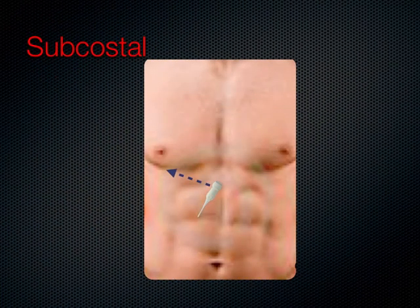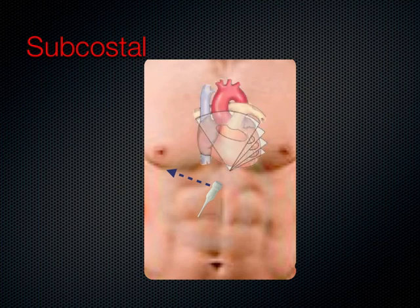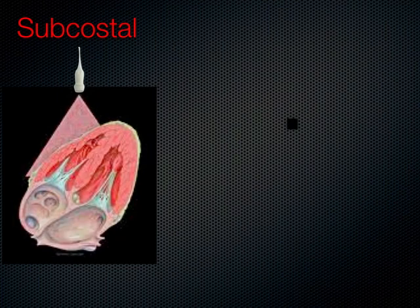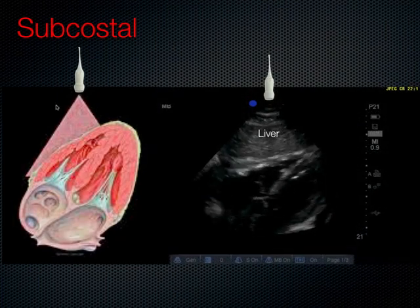Focusing on the subcostal view: this is one of the most useful views, one of the easiest to train, and the one where we can evaluate IVC for volume status. There is an indicator on each probe that helps with orientation. In this view, the indicator is towards the patient's right. From underneath the diaphragm, we look through the diaphragm up into the thorax and view the heart in several different cuts. This is an overhand grip with the probe somewhat parallel to the bed with significant pressure pushing down into the abdomen.